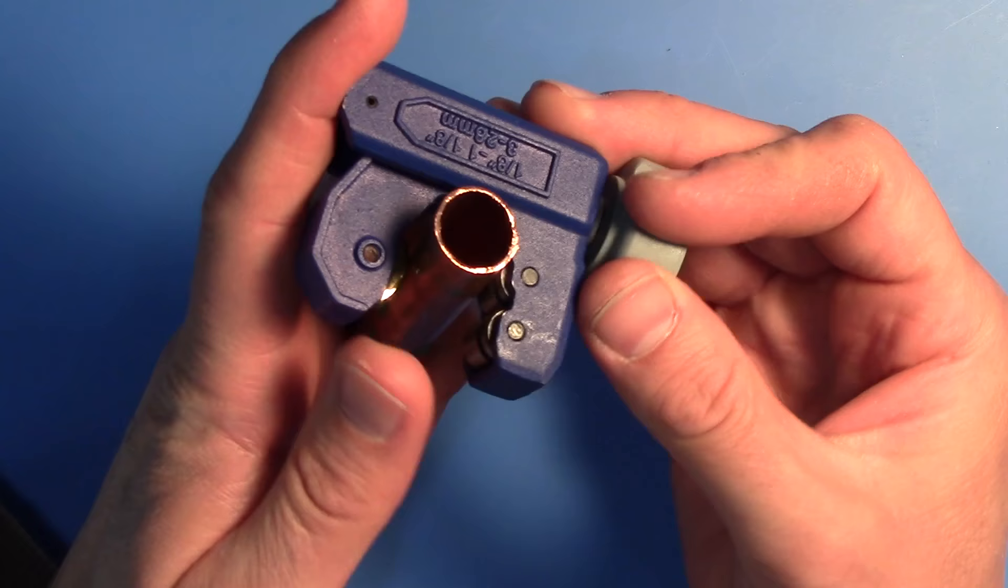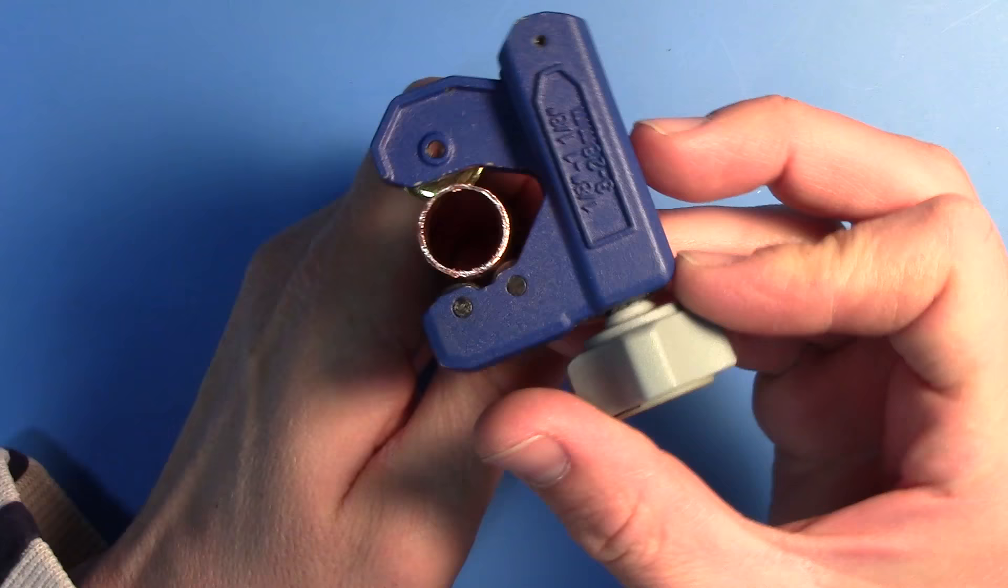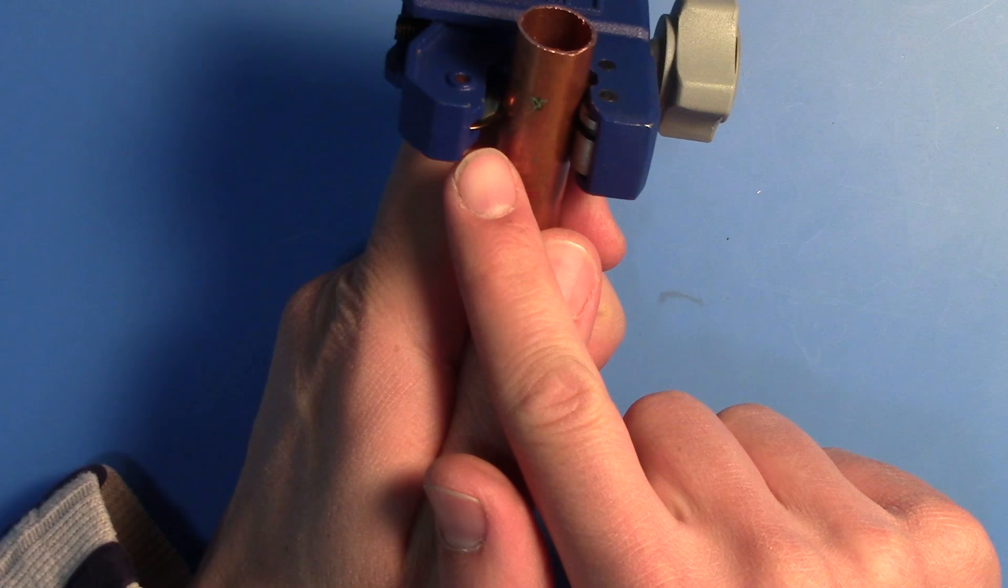We're going to pop it in. This is really handy for cutting pipe in small places where you don't have a lot of room to move tools around, like in walls and things like that. You clamp it on and tighten it just enough so that this cutting wheel bites. Then you spin it around.